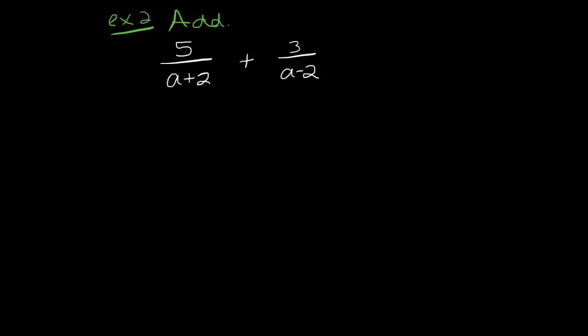So we're going to have to multiply this a plus 2 by an a minus 2, and this a minus 2 by an a plus 2, in order to create the lowest common denominator. Obviously I'm going to do the same thing to the numerators. And notice if you didn't add those parentheses, you wouldn't be multiplying correctly.